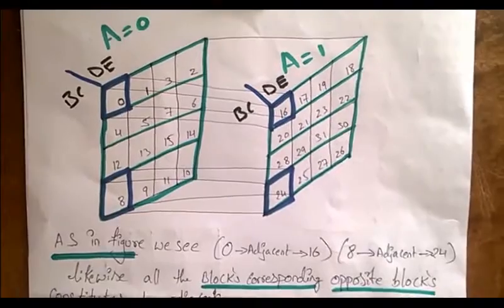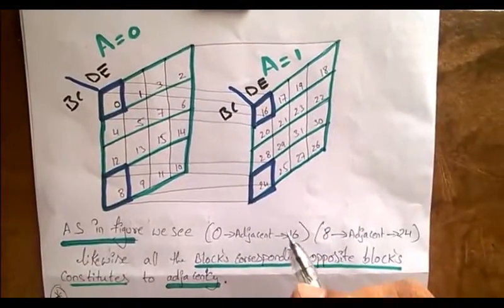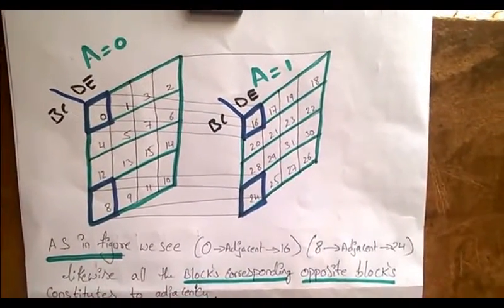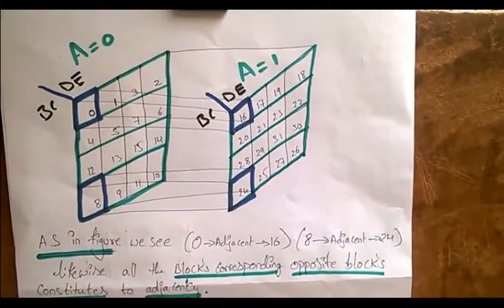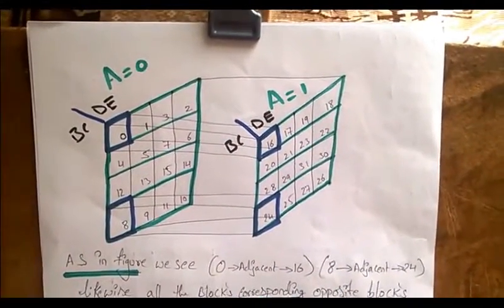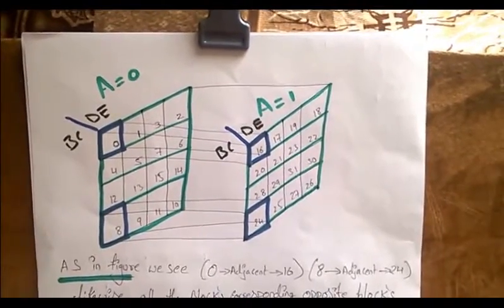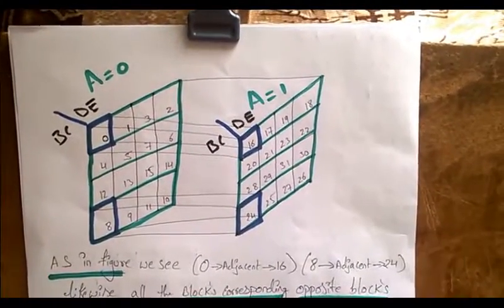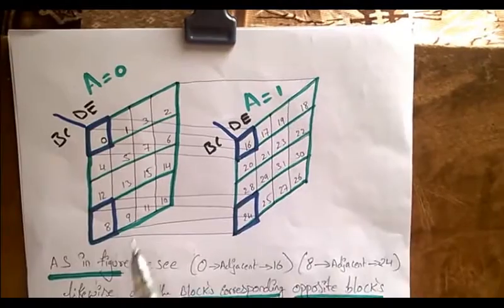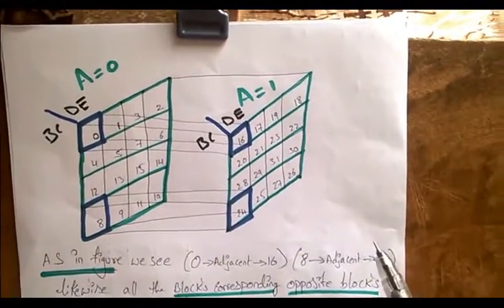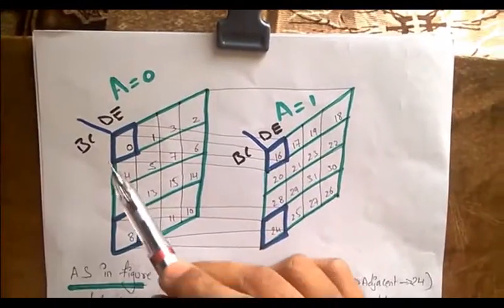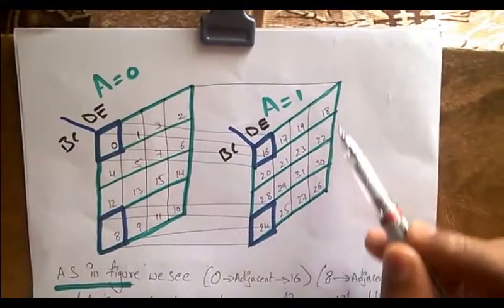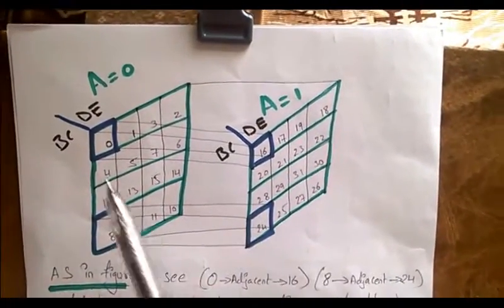Now what's the concept behind 5-variable K-map? We don't take a single huge block of 32 inputs. As you know, for n variables, 2 power n inputs are obtained. So for 5 variables, 2 power 5 is 32 inputs. The logic is we have to consider two 4-variable K-maps and the numbering has to be given respectively.